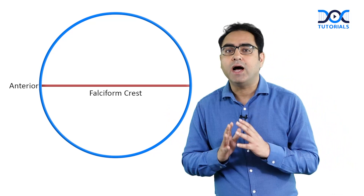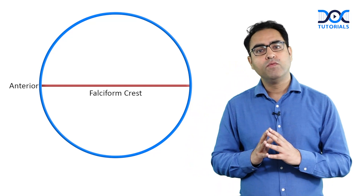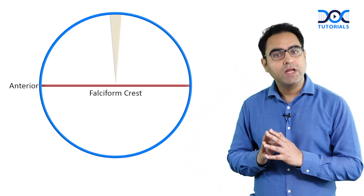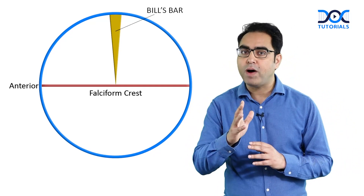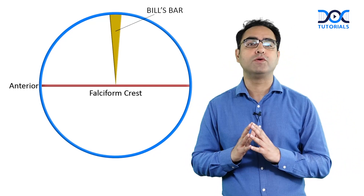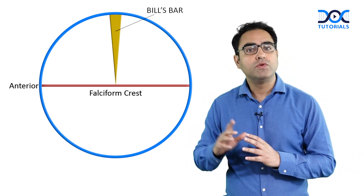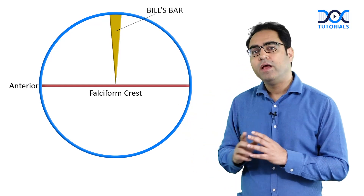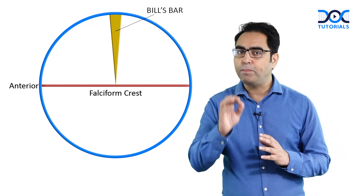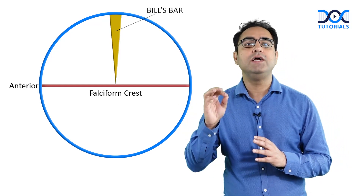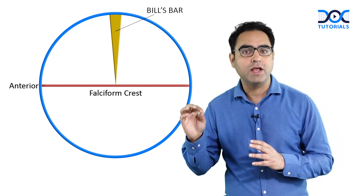And in the upper part, we have got a vertical bony septum, which is called Bill's bar — a very important question for you. So Bill's bar is a vertical bony septum in the upper part of the internal auditory canal.